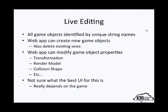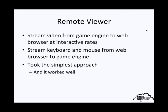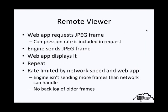The final example I'll talk about is the remote viewer — streaming a video from your game engine to a web browser at interactive rates, and in turn streaming the keyboard and mouse from the web browser back to the game engine. I took the simplest approach and it worked reasonably well. The web app requests a JPEG frame, with the compression rate as part of the request. The engine compresses the frame buffer and sends back a JPEG frame, which the web app displays, repeated in a loop. I chose this approach to allow the web application to rate-limit the frames, avoiding the problem of the engine sending more frames than the network can handle, with no backlog of older frames.